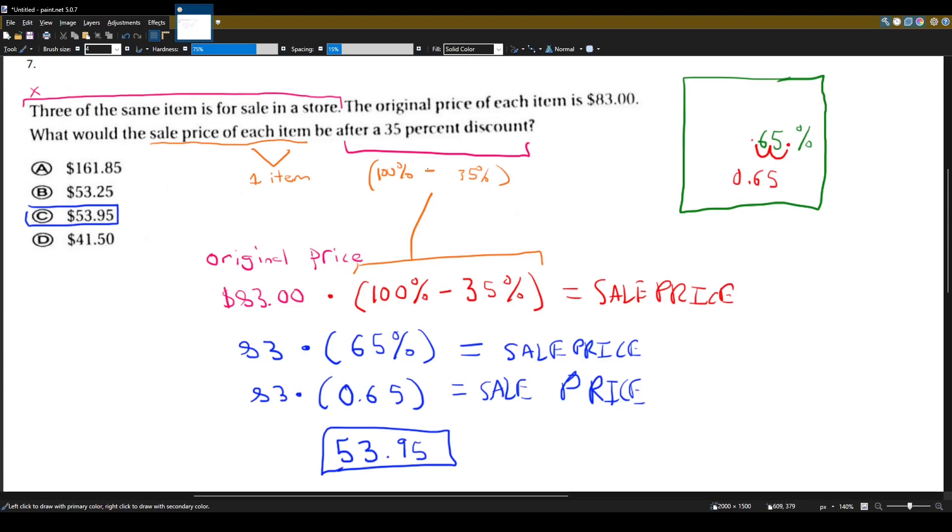And the reason why I did subtraction instead of addition or anything else is because I want to know how much percent of my item after I take away 35% discount. So in this case, I want to know how much is 65% of the original price. Because 65% represents a 35% discount.